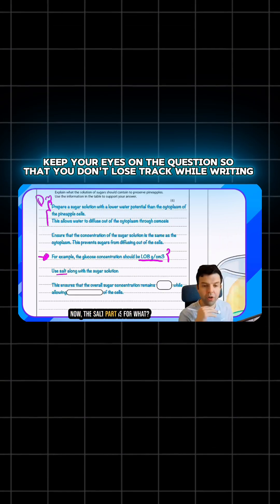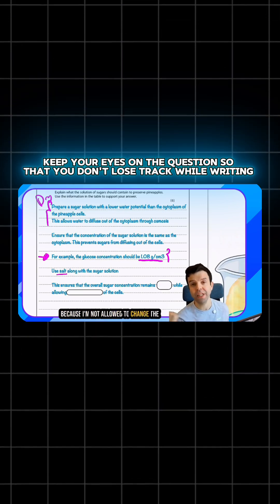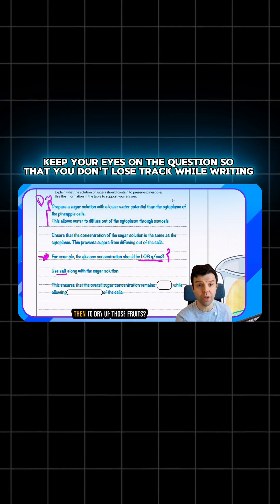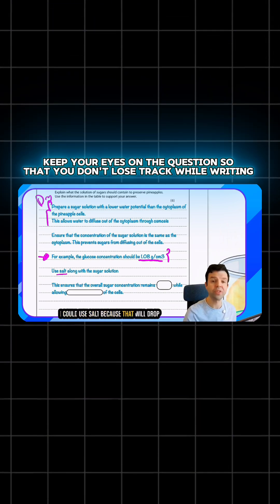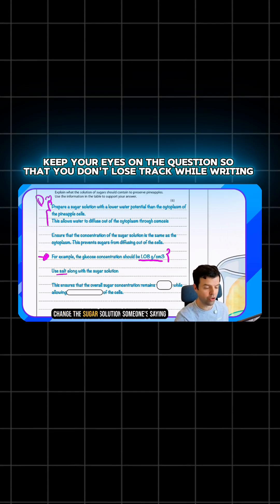Now, the salt part is for what? Because I'm not allowed to change the sugar solution outside those fruits, what am I supposed to do then to dry up those fruits? I could use salt because that will drop the water potential and it's not going to change the sugar solution.